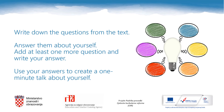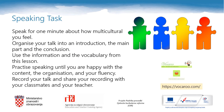You will add one more question so that you have six questions and six answers. Then you will arrange the answers into a one-minute talk. Remember to add the introduction and the conclusion. Choose your task: speak for one minute about how multicultural you feel, and organise your talk into an introduction, the main part, and the conclusion. Use the information and vocabulary from this lesson. When you have your talk, practice speaking until you are happy with the content, the organisation, and your fluency. When you are happy, record your talk and share the recording with your classmates and your teacher. To record your talk, you can use the tool walkaroo.com — you can see the link on this slide.